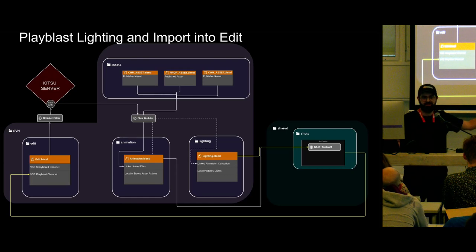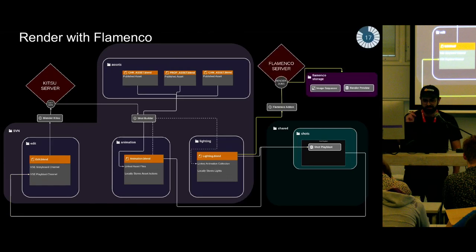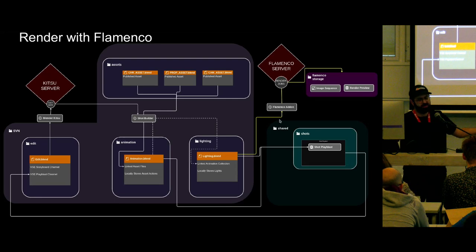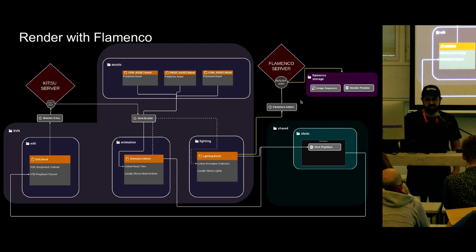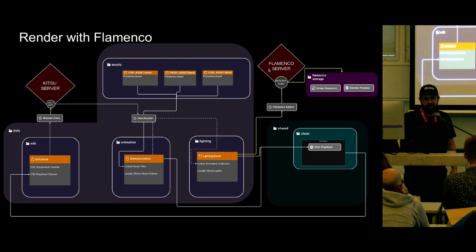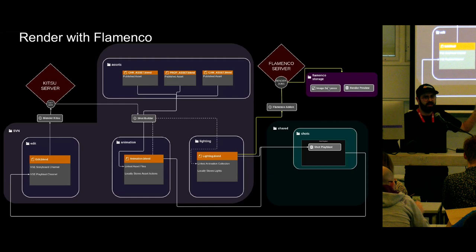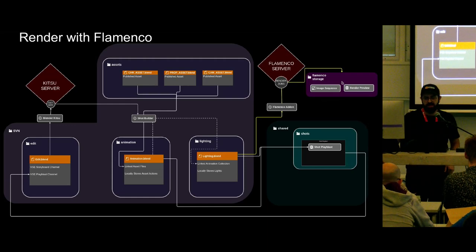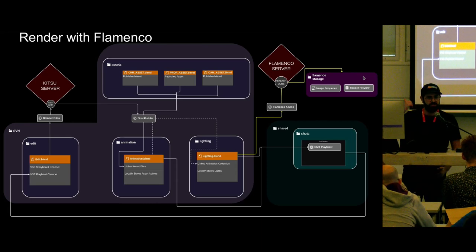The next step is going to be sending this data to Flamenco. Flamenco is our render manager, and we have a Blender add-on to send jobs to Flamenco — that's what this shape here represents. Flamenco will render those frames, create an image sequence and a preview video of the image sequence, and dump them wherever we have our Flamenco storage set to — in my case that's the project slash render directory.